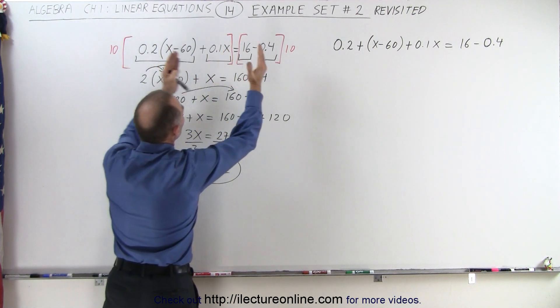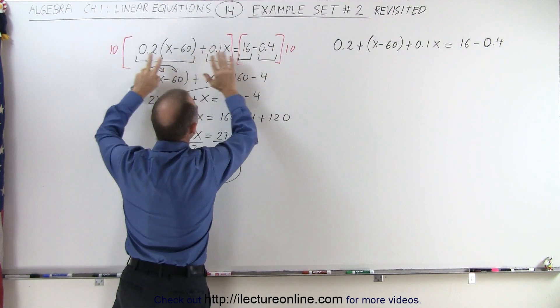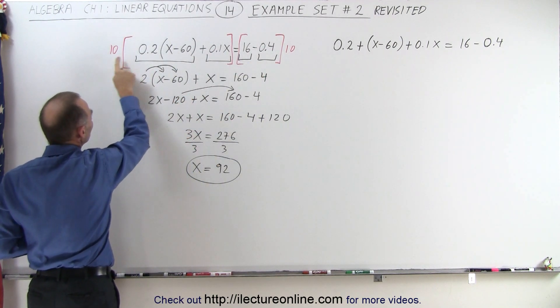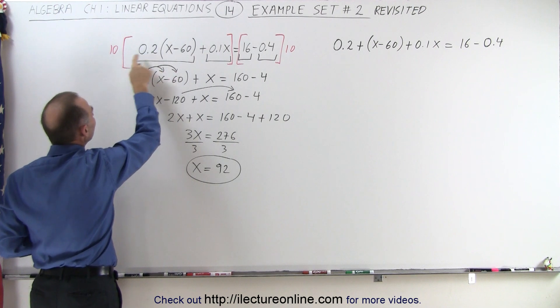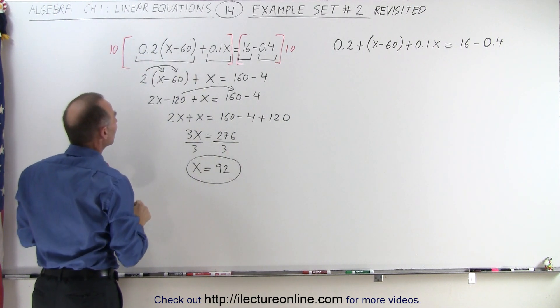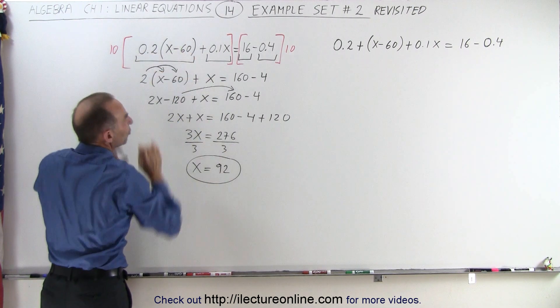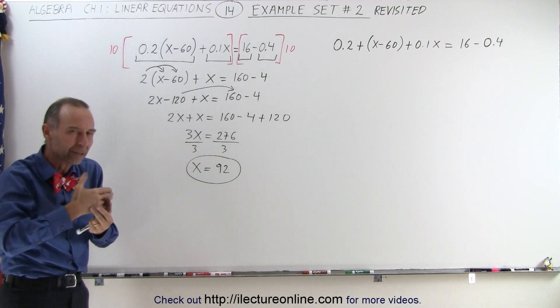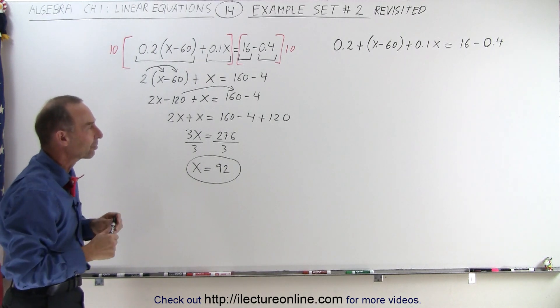When we multiply both sides of the equation by 10 in order to get rid of the decimals, we only multiply on the left side the 10 with the 0.2 not with the x minus 60 because these two are factors of one another. So whenever there's factors and we multiply, we only multiply it once not each of the factors.